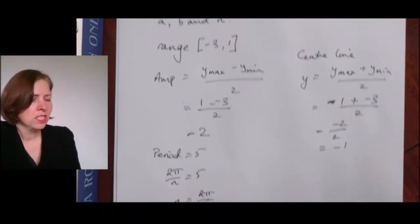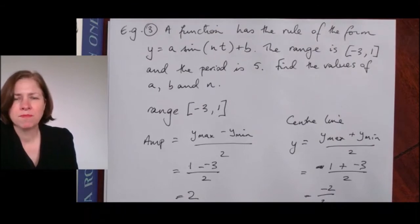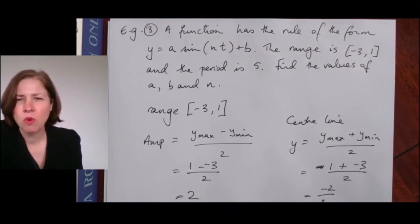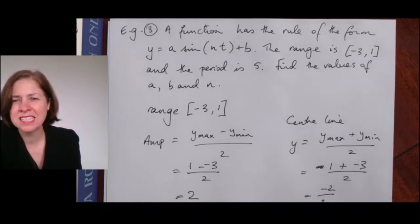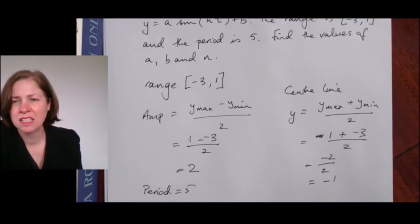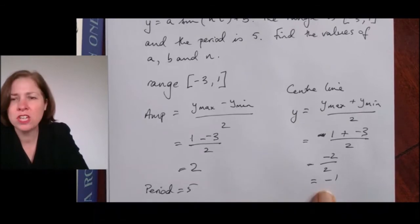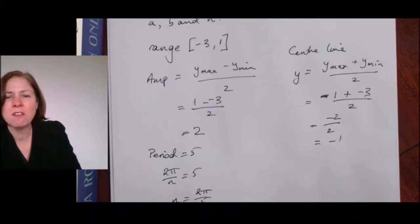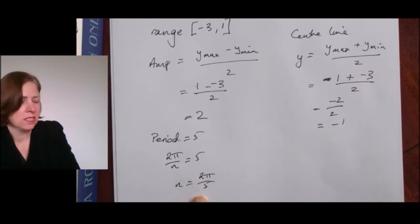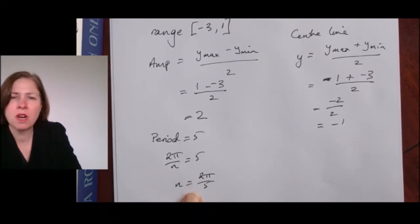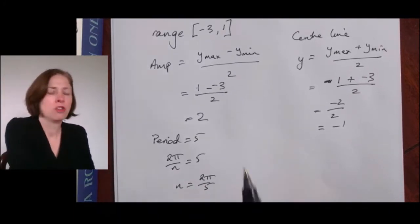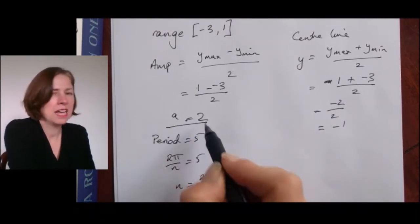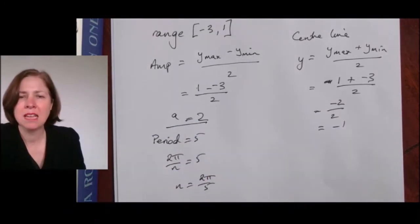The question doesn't ask me to write the equation — it asks me to write the values of a, b, and n. I always go back and check the question. What I've done is found an equation for the center line and my amplitude. I have found n, so I'll pop an 'a' in there and underline it so anyone scanning my work can find the answer for the value of a.